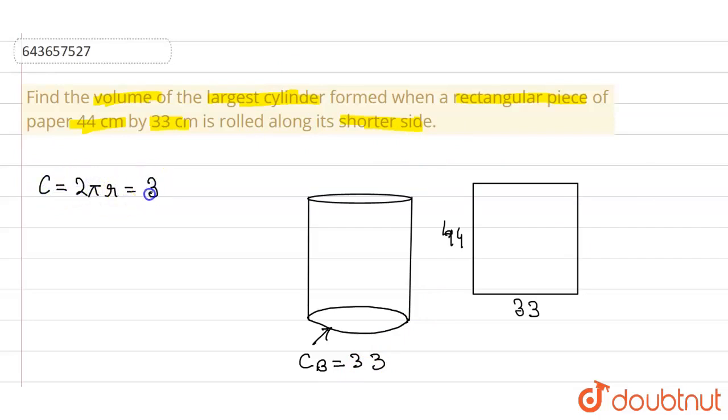Which is equal to 2πr, which is given as 33. So r will be equal to 33 by 2π. Now what we have to do is calculate the volume.